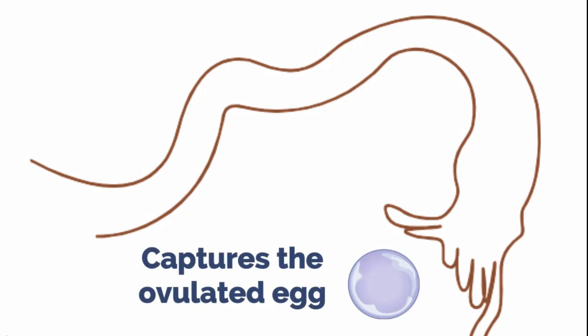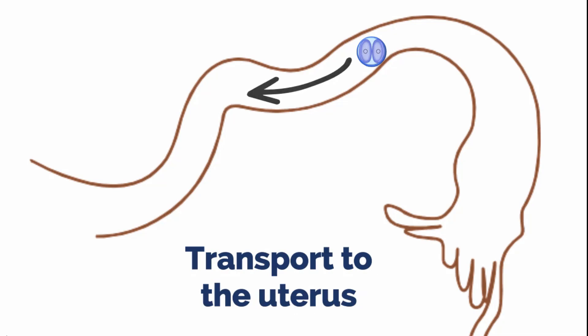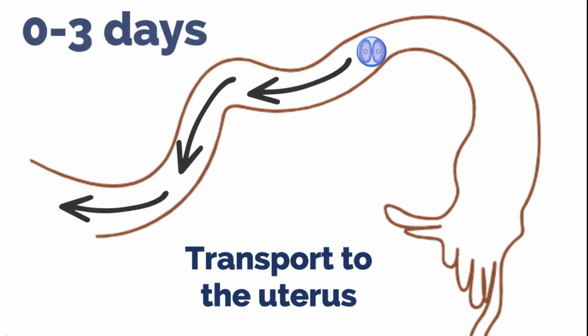Before we review the pathophysiology of ectopic pregnancies, let's review the function, histology, and anatomy of the fallopian tubes. The role of the fallopian tube is to capture the ovulated egg, provide an environment for fertilization with sperm, and to transport the zygote to the uterus, typically within 3 days.